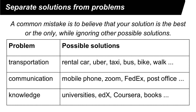Another problem is communication. People can communicate in many different ways such as mobile phone or video call, or they can send a FedEx package or letters. You have to understand the problem — for example, how urgent it is. If it is urgent, people may want to talk by mobile phone; if not, it may be okay to send letters. The third example is how to acquire knowledge. People want to learn things, but they don't have to go to universities — they may learn online using edX or Coursera, or go to a library and read books. You have to understand the problems people want to solve before you jump into a particular solution.